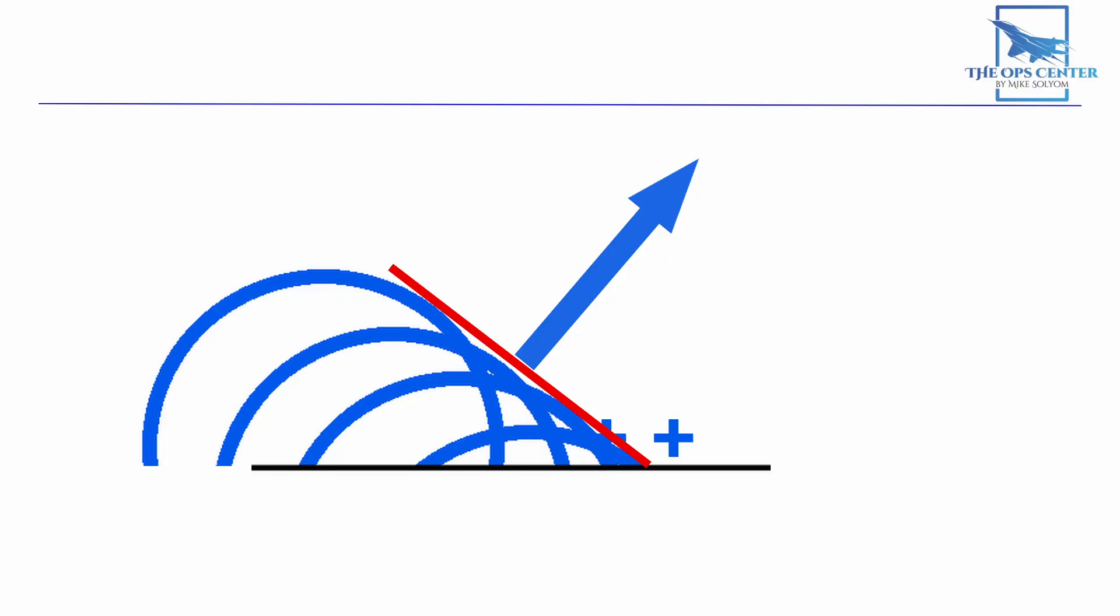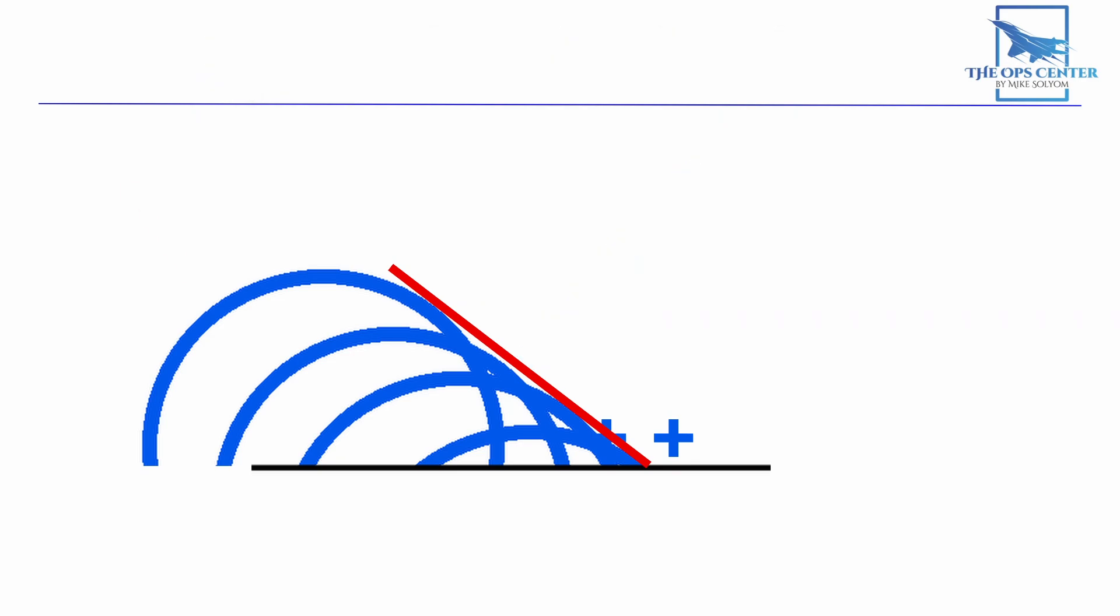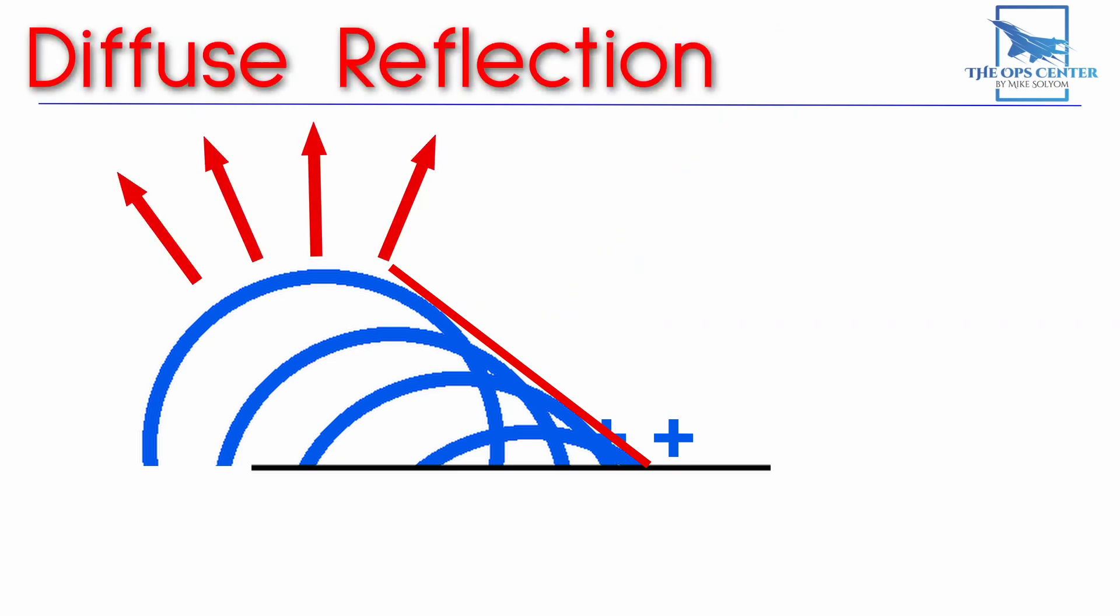So anyone observing their reflection would get the strongest signal from here. There's a name for this phenomenon. It's called a specular reflection, and it's important for low observability. Now there is still some radiated energy going off on these other angles, and those reflections are known as diffuse reflections. However, they'll never be as strong as a specular reflection.